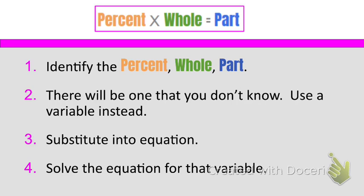We're going to identify the percent, the whole, and the part. There will be one that we don't know, so we'll use a variable instead. Then we'll substitute it into the formula and solve for the variable. Let's go over a couple of examples.